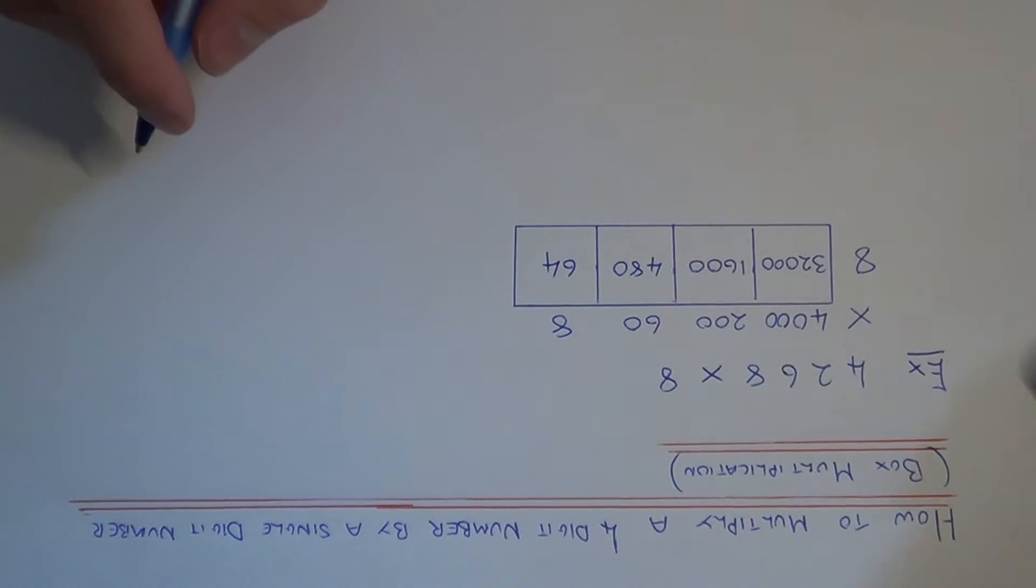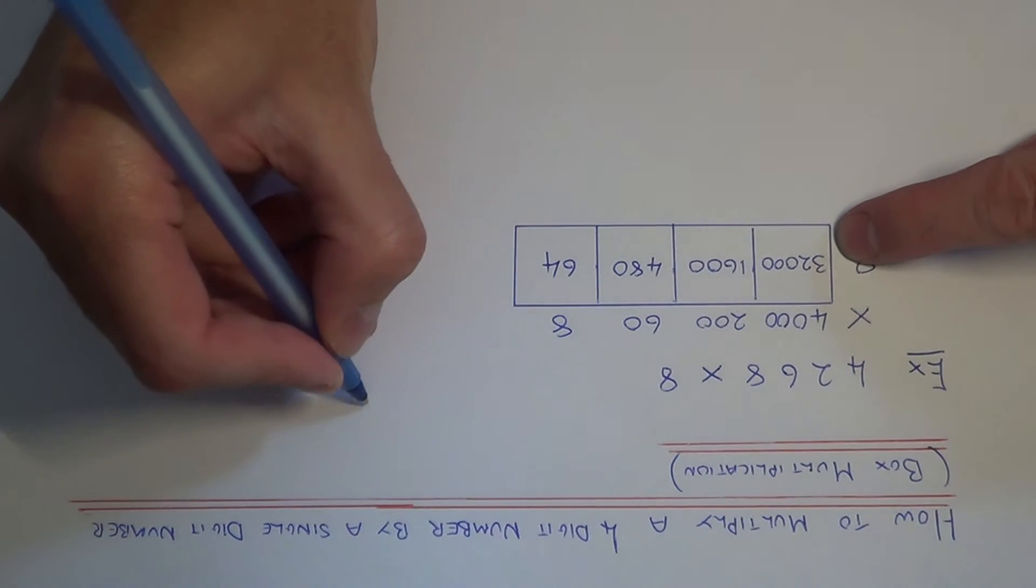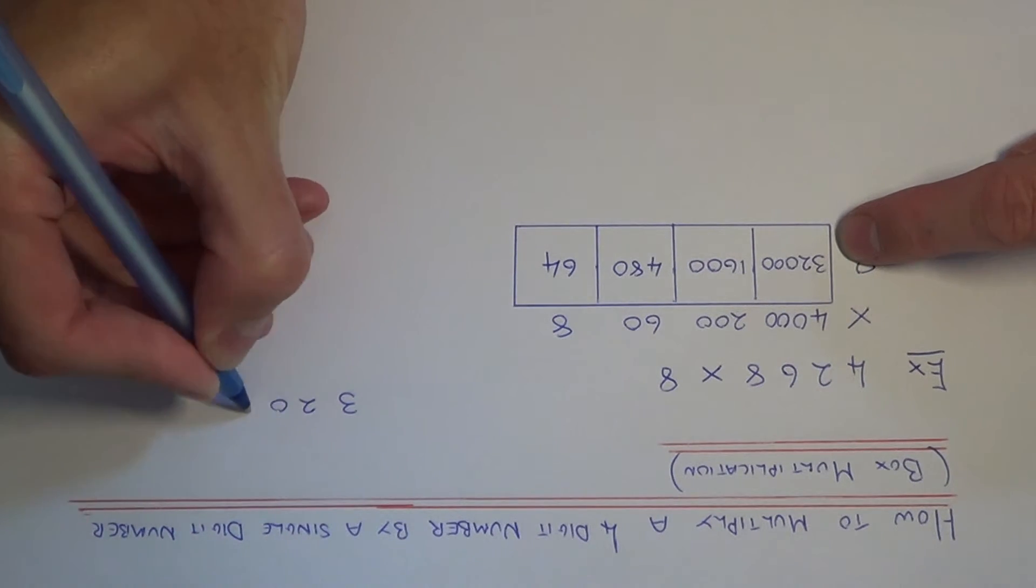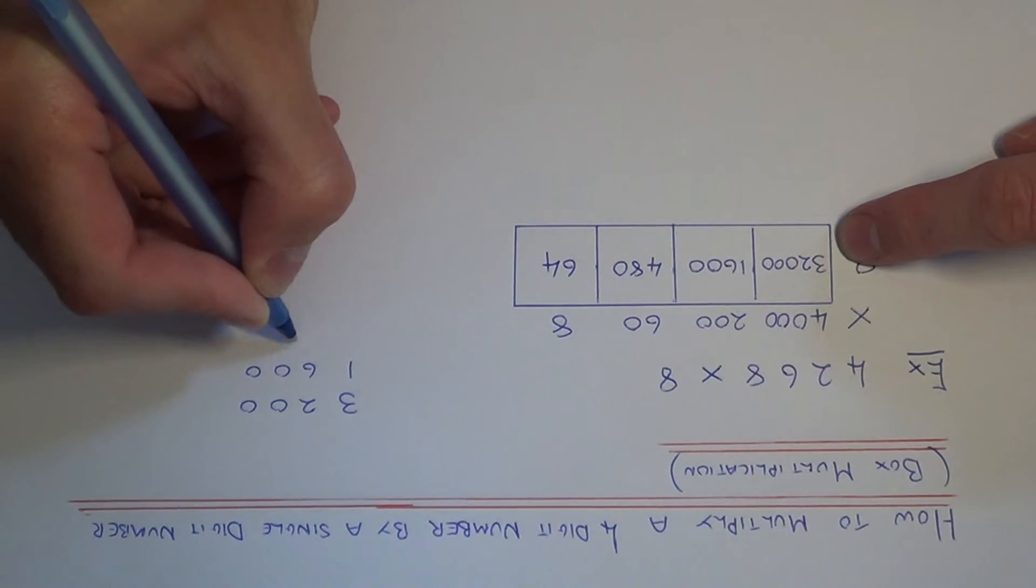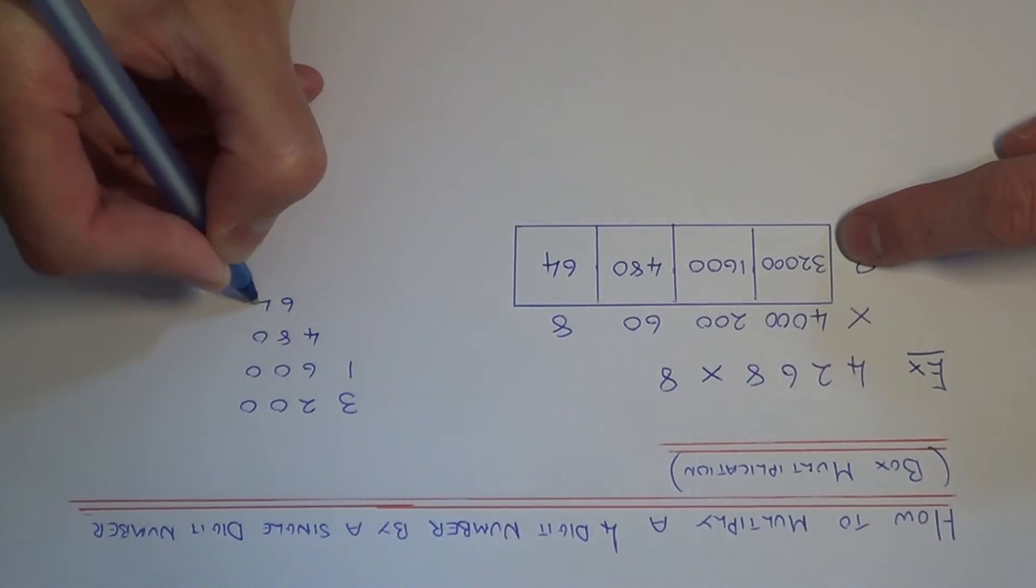So we've worked out our four boxes, and the final step next is to just add up these four numbers. So we've got 32,000, 1,600, 480, and 64.